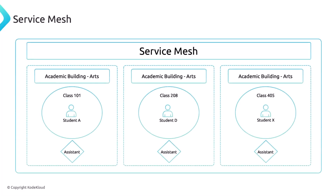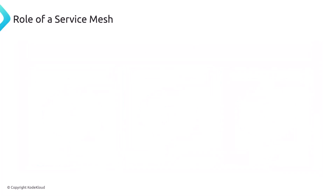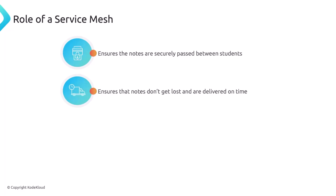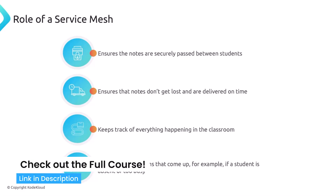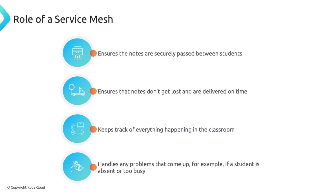You can extend the same concept across multiple classes — each class has an assistant. If student A wants to send a note to student X in another academic building, the student sends it to the assistant, and the assistant will exchange those notes on behalf of the students. The service mesh ensures communication stays private, makes sure notes don't get lost, logs everything — notes coming in, notes going out — and handles issues that arise, like a student being absent. In summary, a service mesh addresses all of these issues and allows students to send notes freely without having to think about the method of sending. Students can simply focus on writing the notes, and the service mesh — the assistant — will handle the rest.